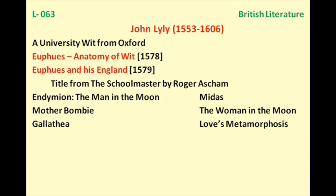Apart from these two important works, we have several other works. Some of them have a relation with the works of the great William Shakespeare. The first comedy is Endymion: The Man in the Moon, published in 1591. This title might attract your attention because by this name Endymion we also have a famous poem written by the Romantic writer John Keats.